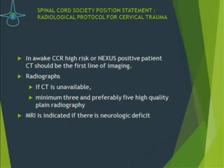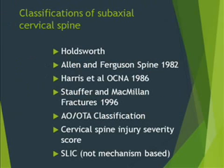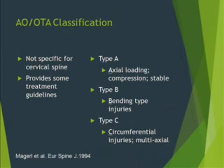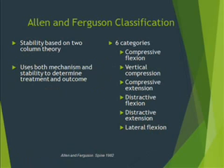The Spinal Cord Society of India has issued position statements, including one on radiological protocol for cervical trauma. In an awake, CCR high-risk or Nexus-positive patient, CT should be the first line of imaging. Radiographs should be done if CT is unavailable, with a minimum of 3 and preferably 5 high-quality plain radiographs. MRI is indicated if there is a neurological deficit.